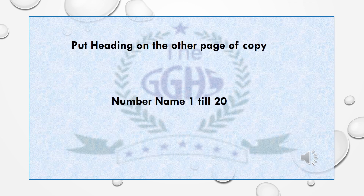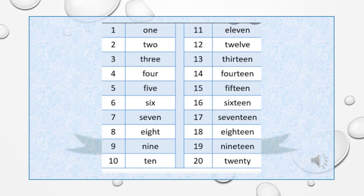Put heading on the other page of copy: number name, 1 till 20. Now we will start a new counting which is number name or words counting.